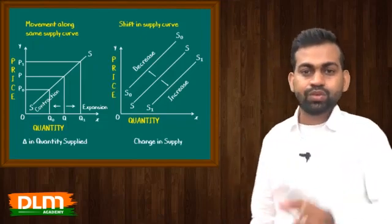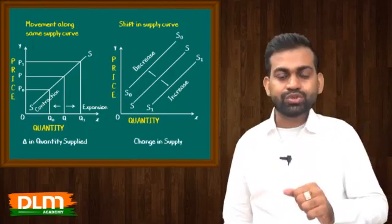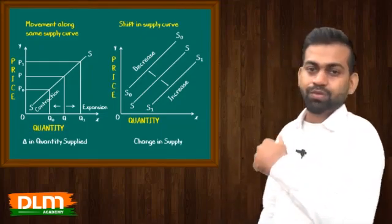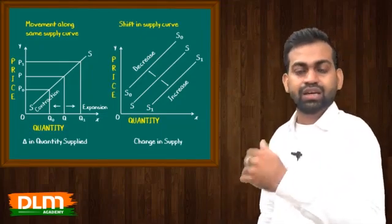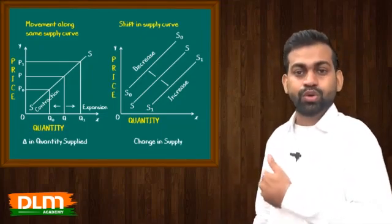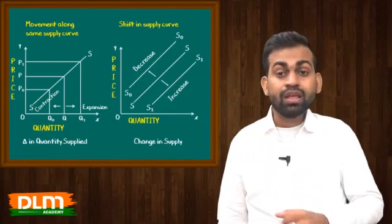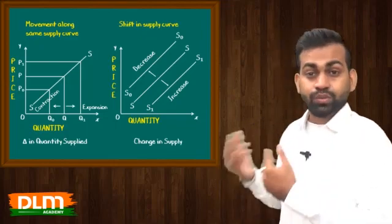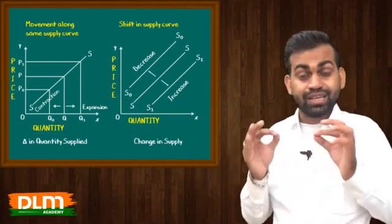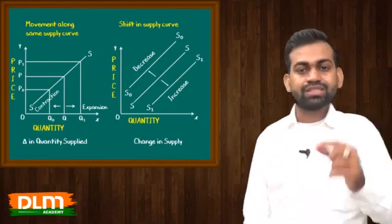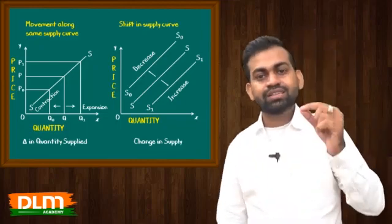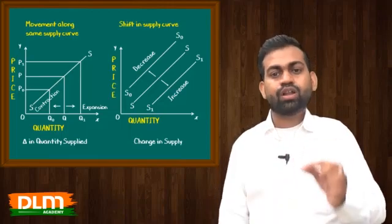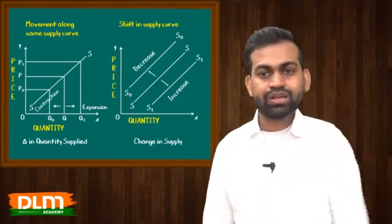Movement mein do tarah ke changes hote hain — contraction aur expansion. Jab price badha, hum upward move hue — expansion. Jab price ghata, downward move hue, quantity kam ho gayi — contraction. Shift mein bhi do tarah ka shift hota hai — rightward shift, that is increase in supply; aur leftward shift, that is decrease in supply. Yeh tha hamaara shift in supply curve and movement along same supply curve.